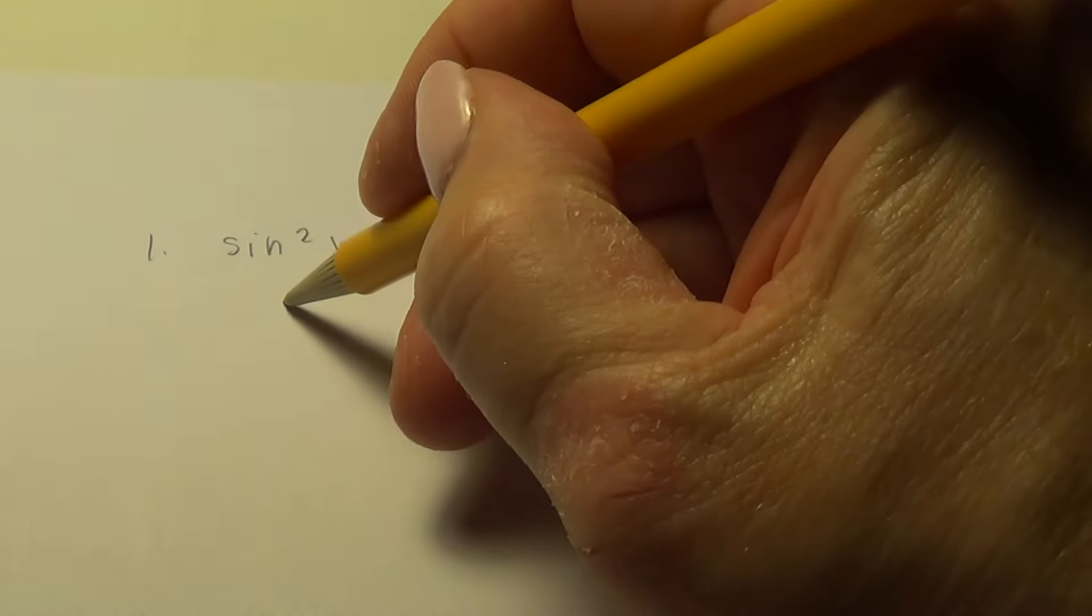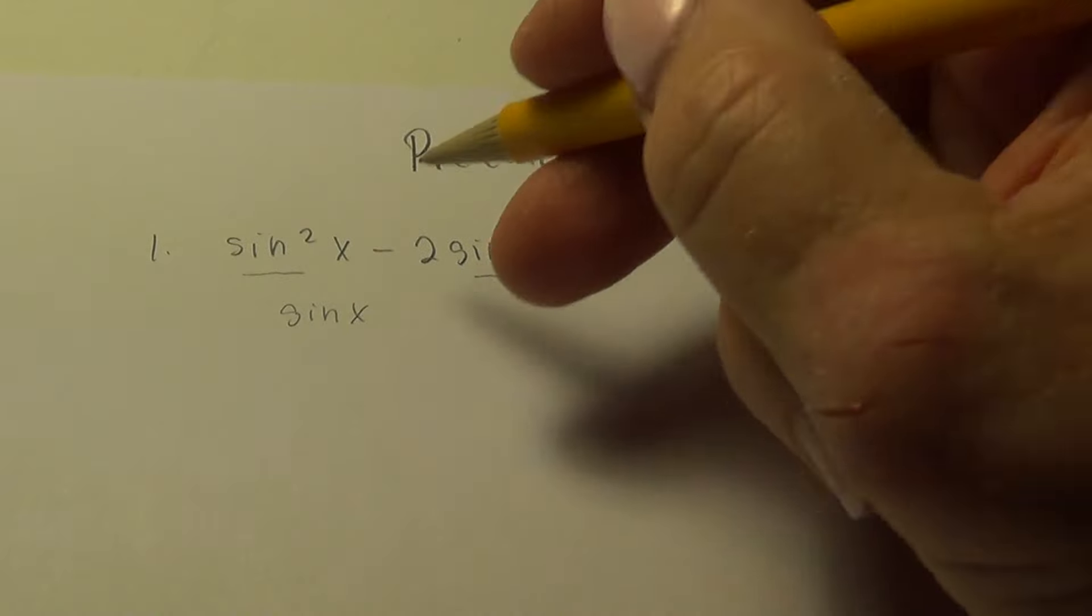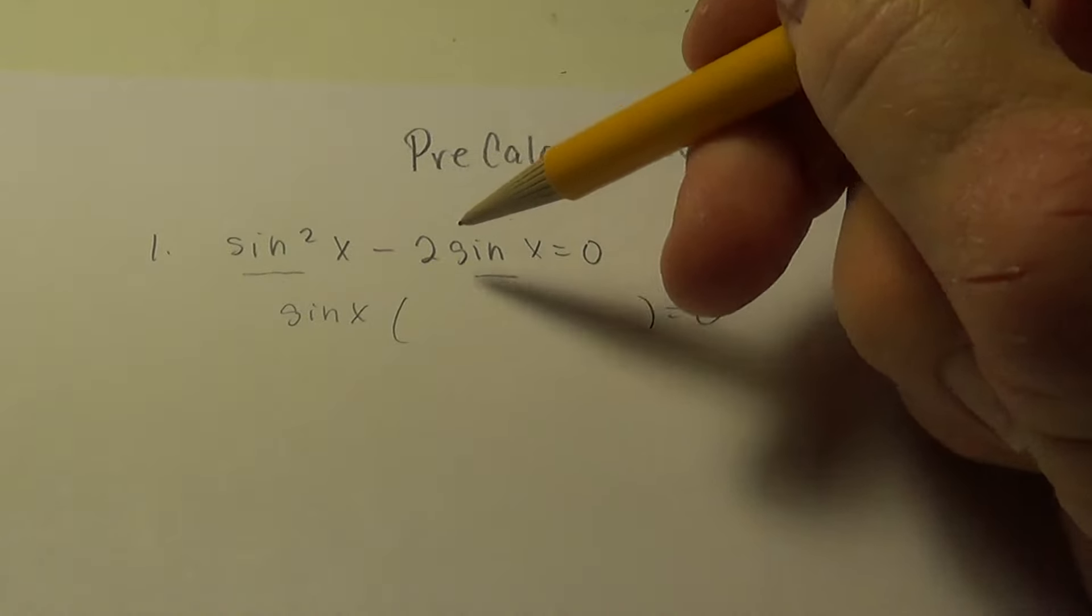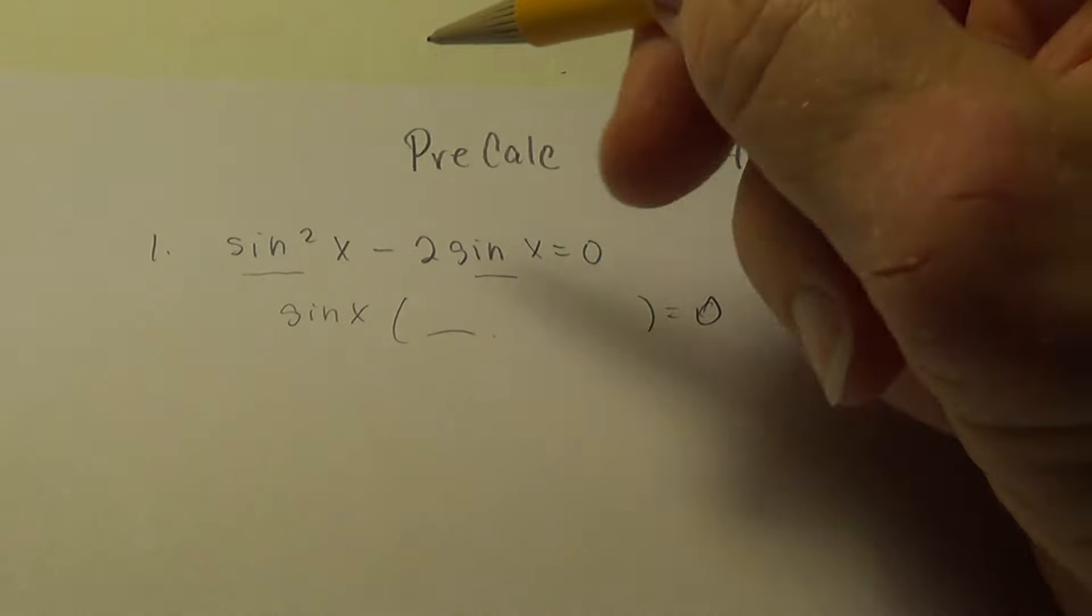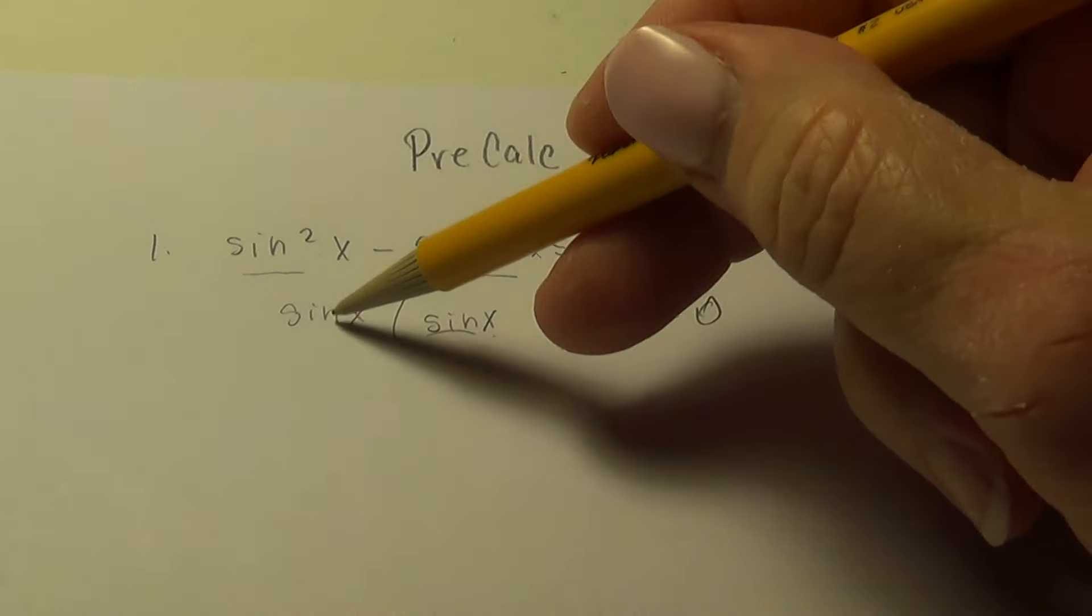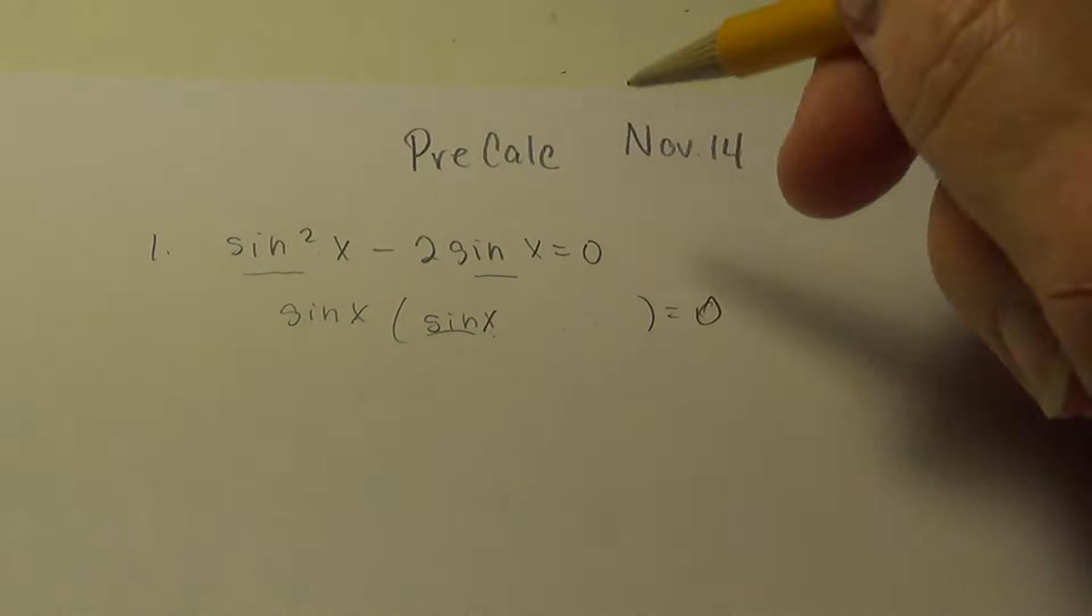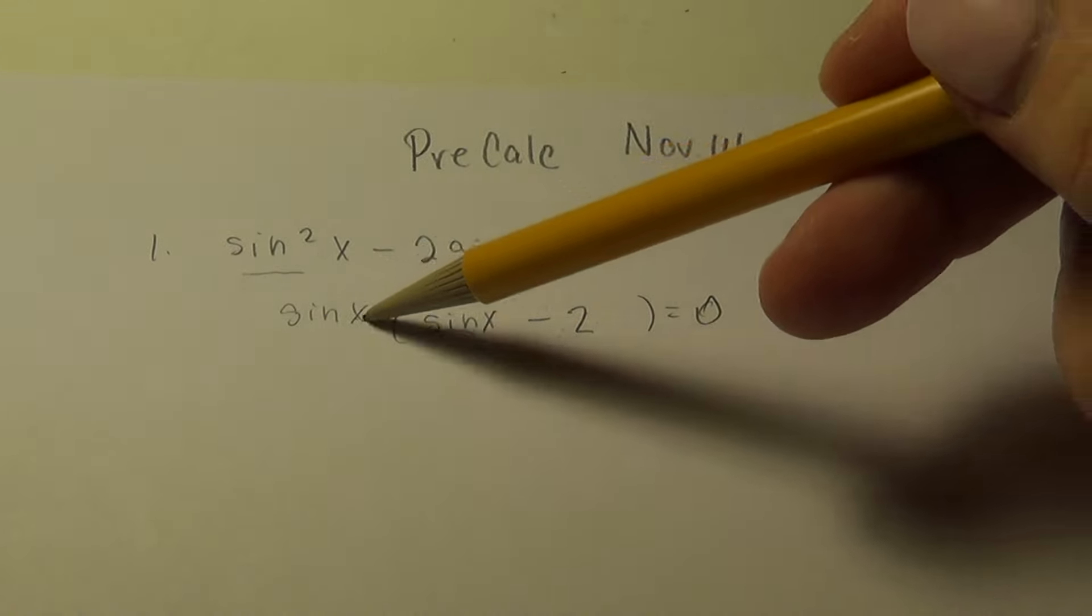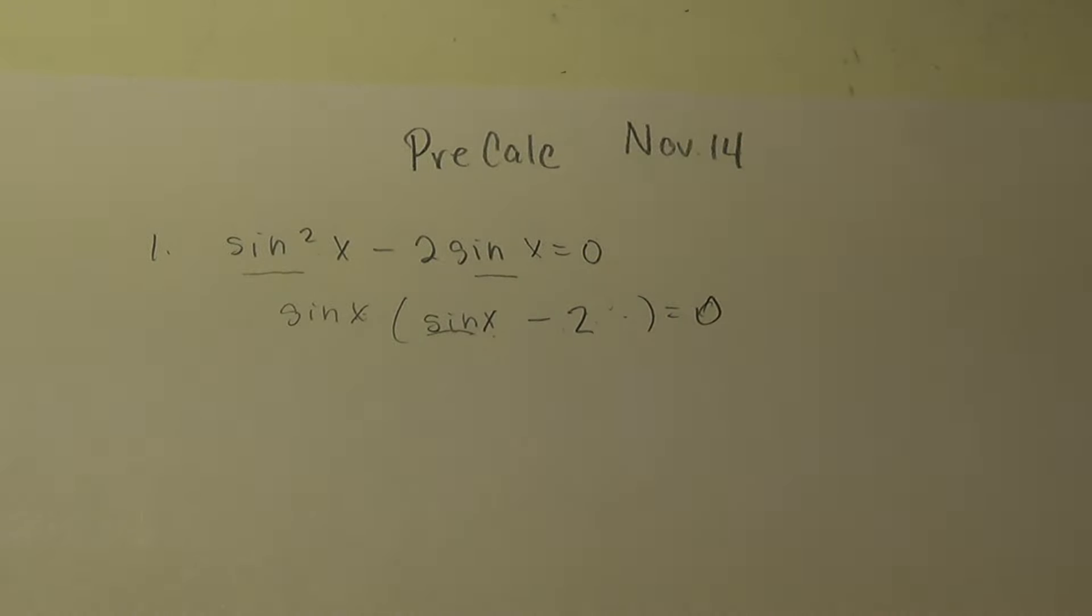When there's two terms, you remove what's common to both. In this case, this has a sin x and this has a sin x. So I'm going to factor it out. When I do that, I'm trying to find an expression here so that when I multiply it by sin x, I get back to sin²x. It must be sin x. Similarly here, I'm looking for an expression. When I multiply this sin x times it, it'll give me -2sin x. So it must be -2. You always check your factoring by multiplying through, distributing through, and seeing if you get back to where you started.